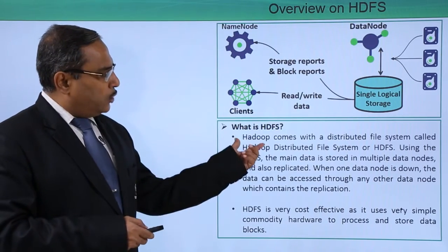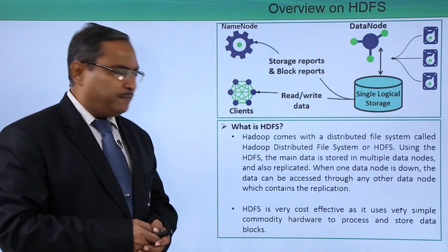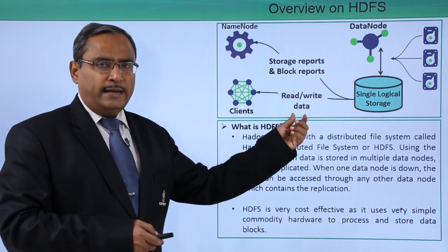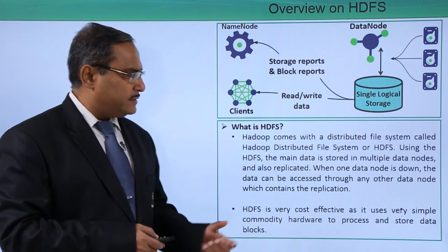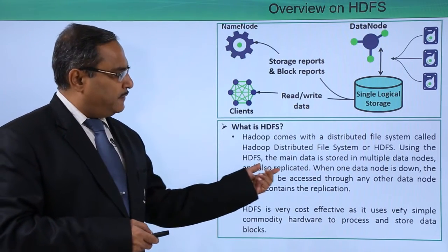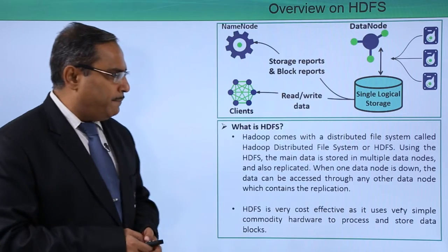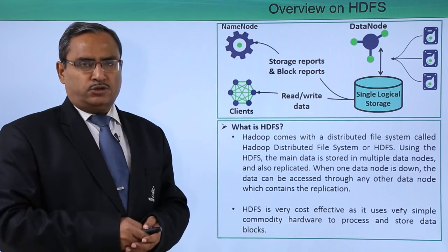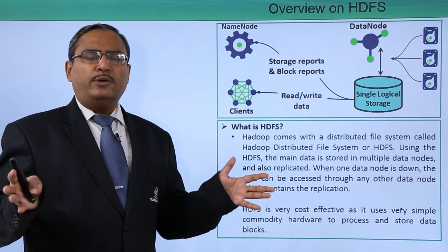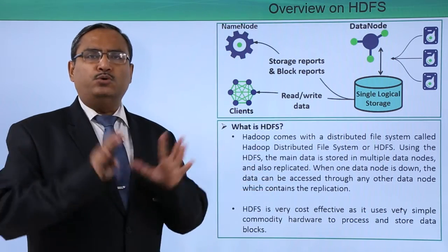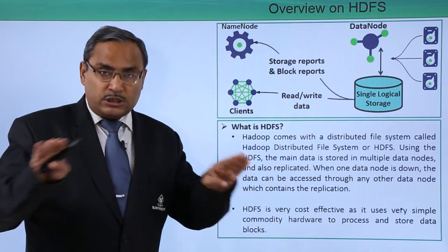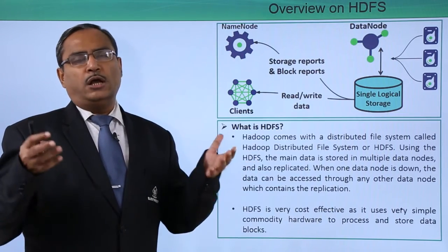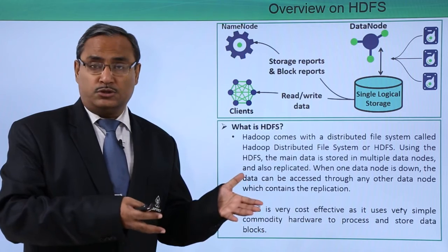What is HDFS? Hadoop comes with a distributed file system called the Hadoop Distributed File System, abbreviated as HDFS. Using HDFS, the main data is stored in multiple data nodes and also replicated. We are going to have a huge amount of data, and they will be distributed into multiple nodes, and all these nodes will also contain some replications.